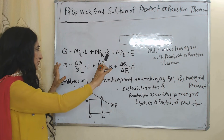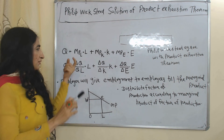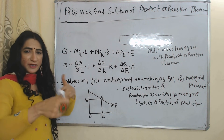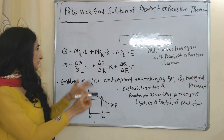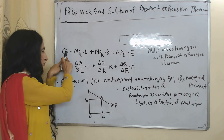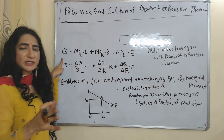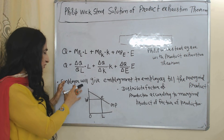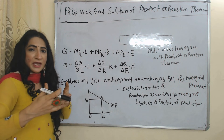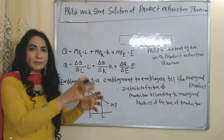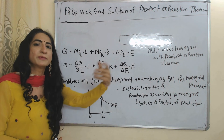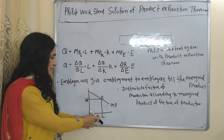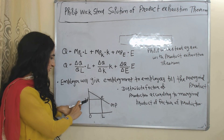According to this equation, if we pay factors of production equal to their marginal product — that is, equal to their contribution — then our total product will be fully exhausted. According to Wicksteed, employers should give employment to employees only up to their marginal product and not beyond this, otherwise their costs would increase. Here you can see on the x-axis we have labor, on the y-axis we have wages, and the curve represents marginal product of labor.